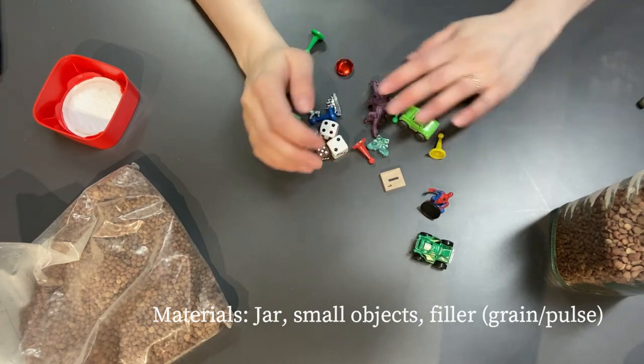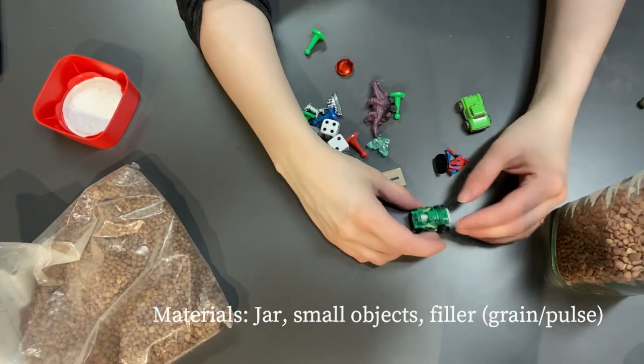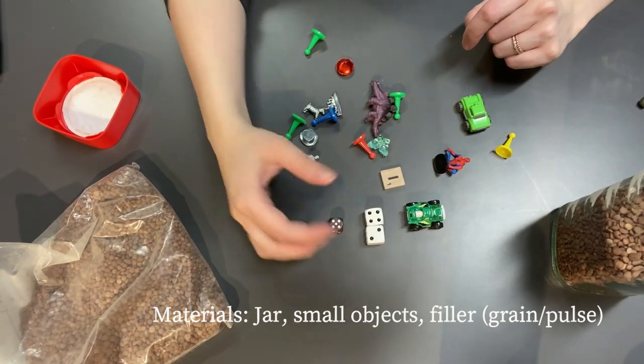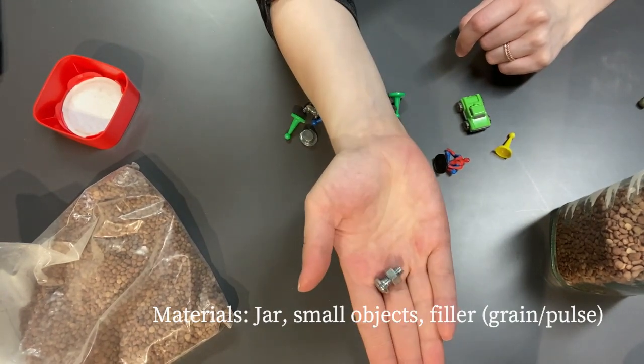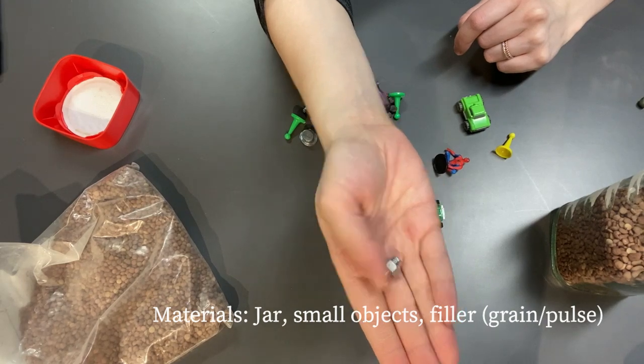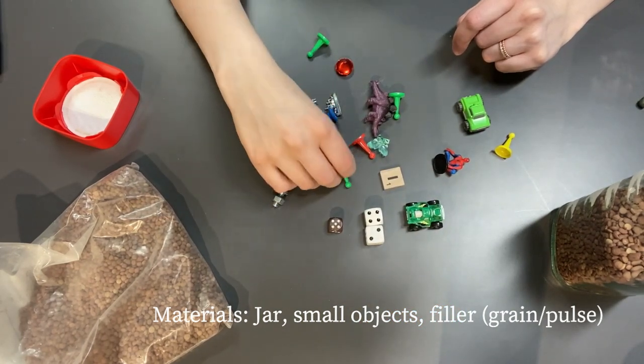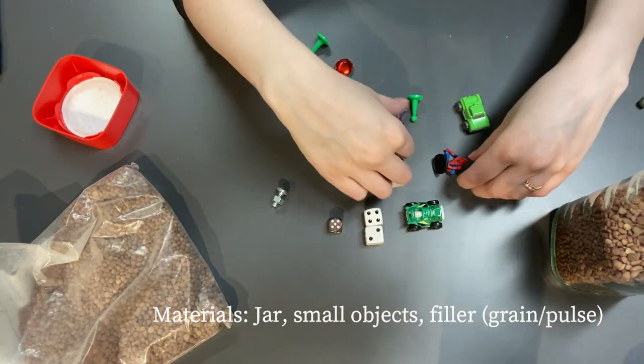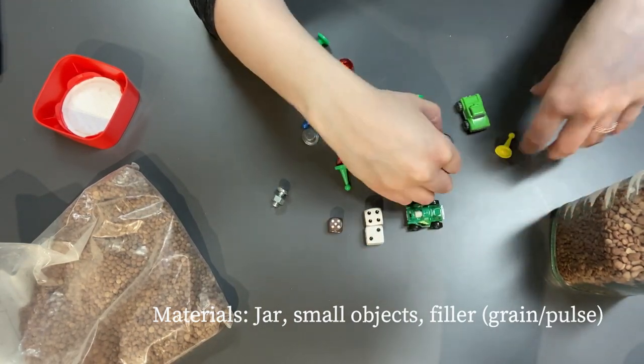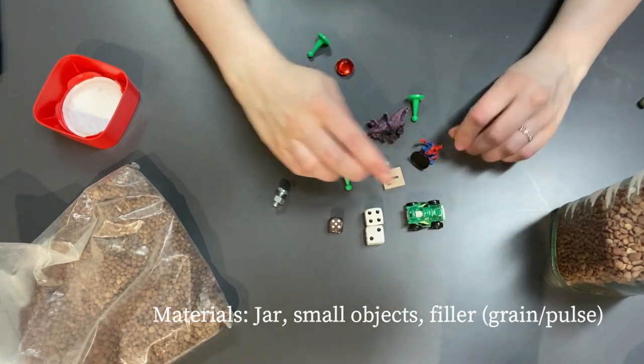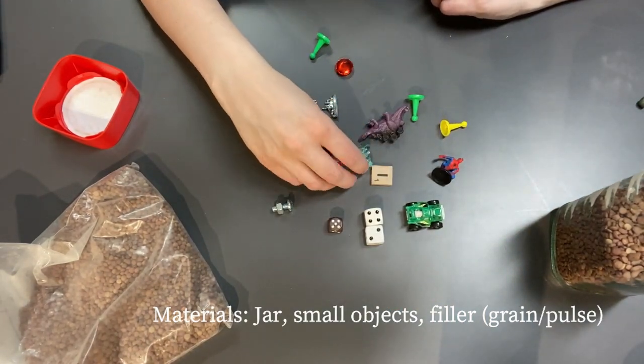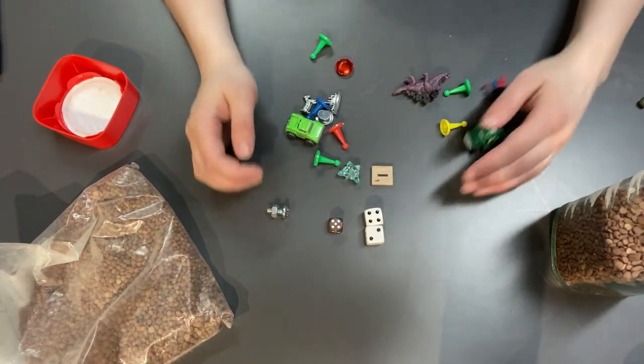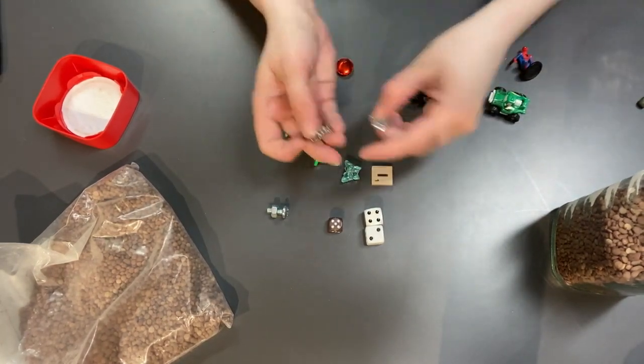And then the toys I found: I have some dice in different colors, a bolt, some playing pieces, a little toy dinosaur, a little Spider-Man, and a green car. The fun thing about this is a lot of this was actually found underneath the shelves at the library here. Some of them came out of board games.